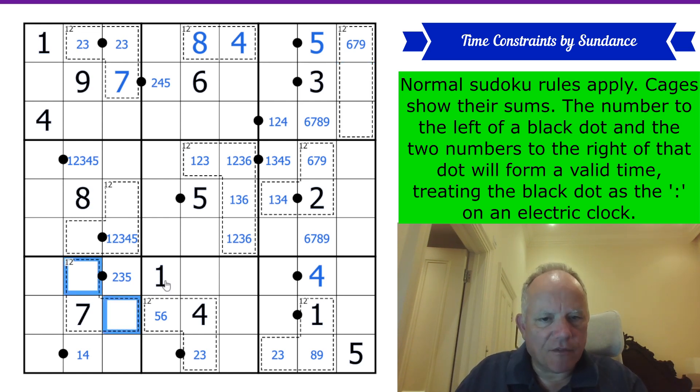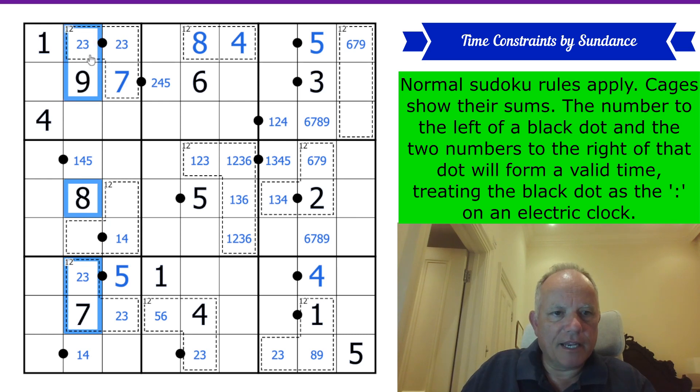This cage can't have a 1, 4 pair. So it's got a 2, 3 pair in it. This becomes a 5. That now can't be 2, 3 or 5. That's 5 or 6. And this is 1, 4, 5 or 6.